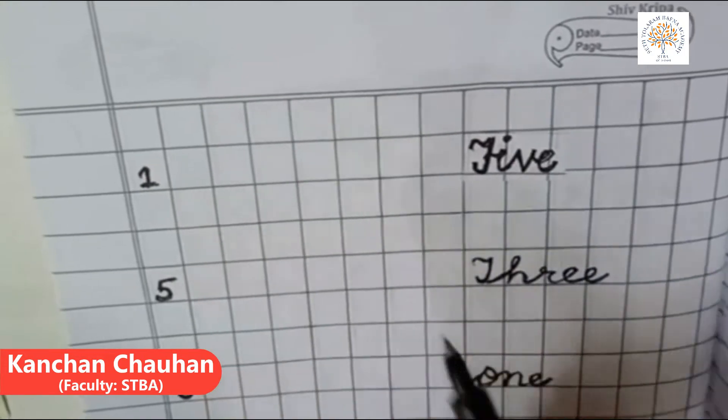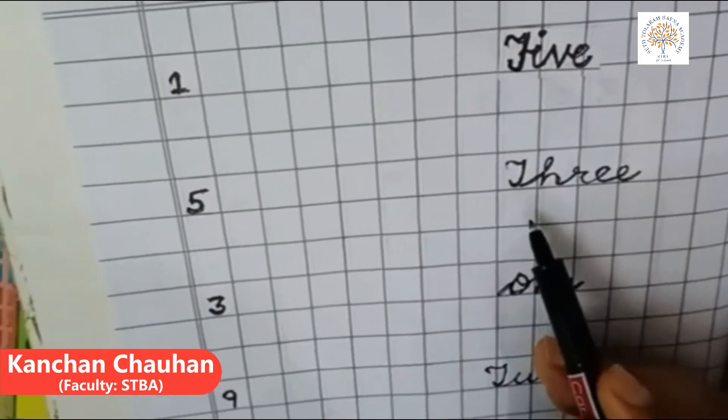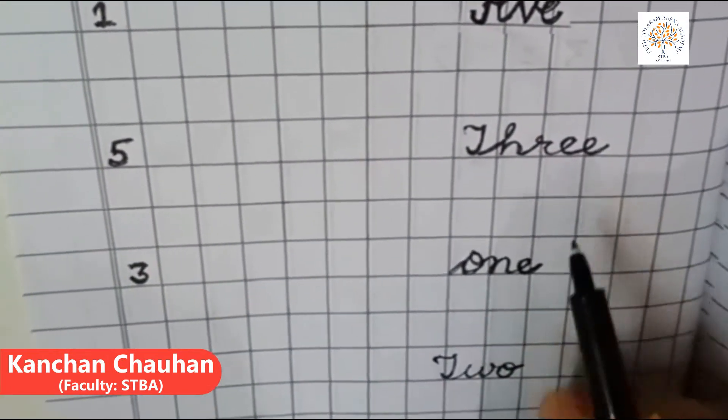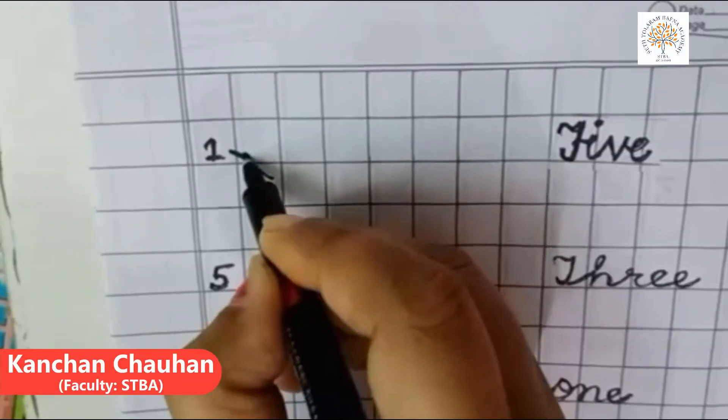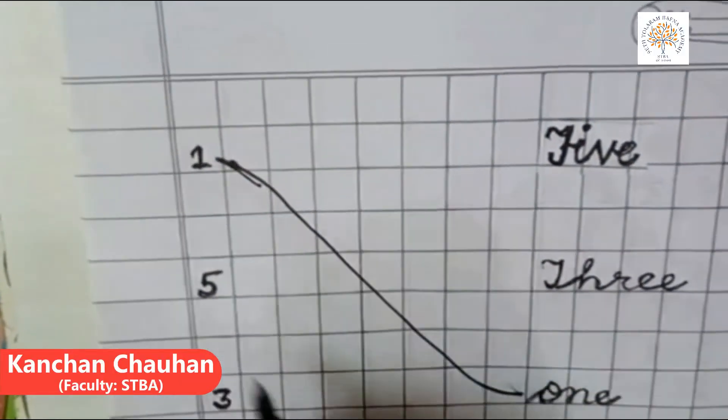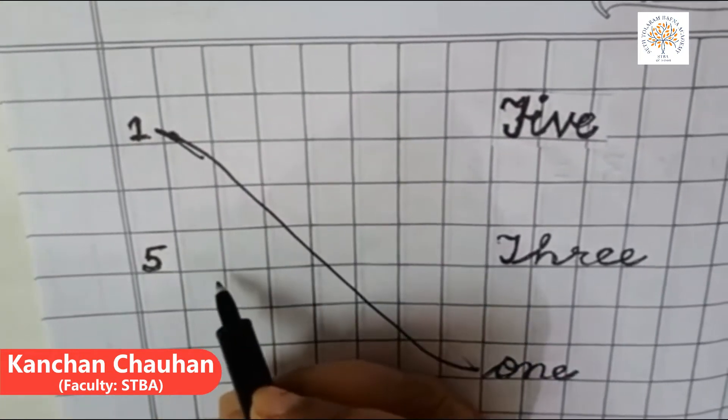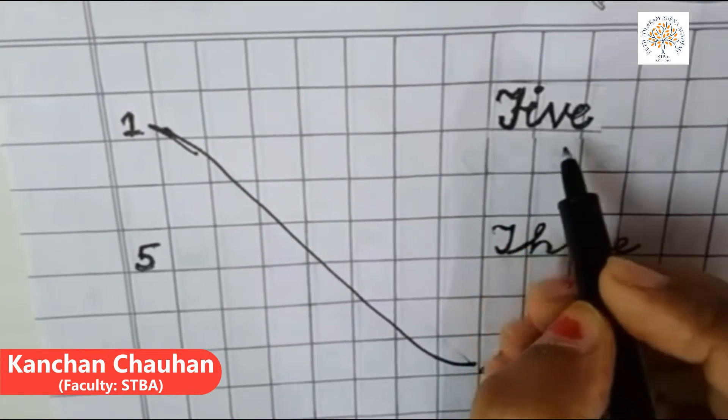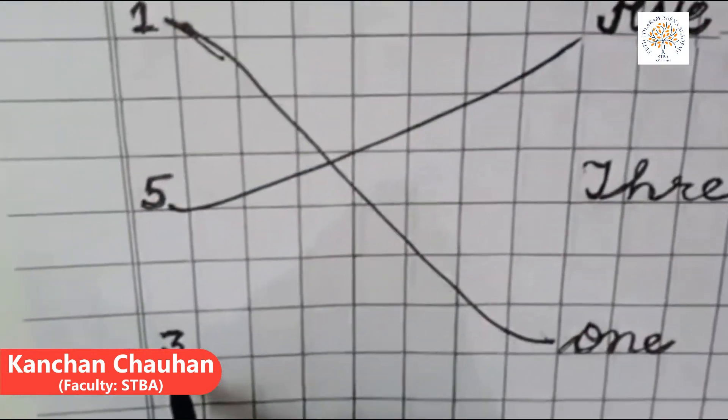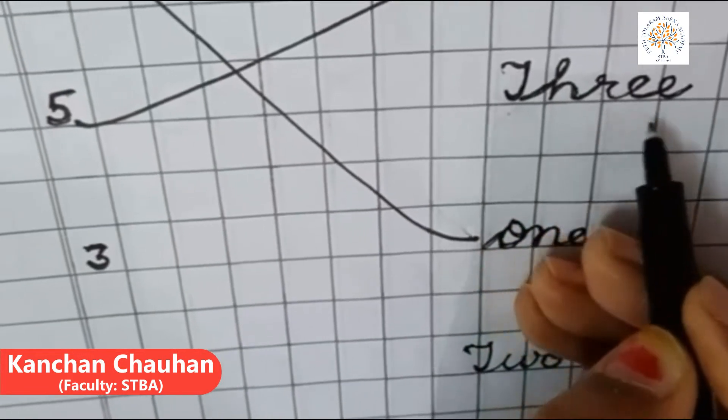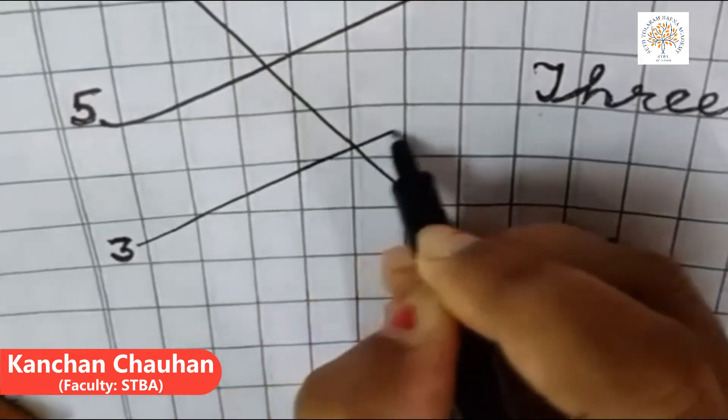Now, find out number name one. F-I-V-E-5, T-H-R-E-E-3, no, O-N-E-1. This is number name for numeral one. So, match it. This is numeral 5 and for 5, number name is F-I-V-E-5. Let's match it. Now, 3. T-H-R-E-E-3. So, match it with number name 3.